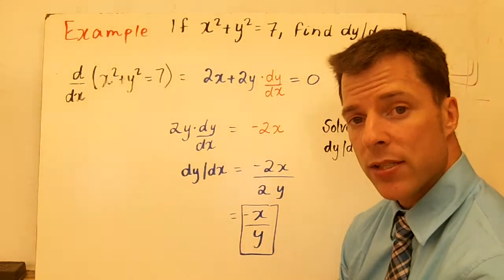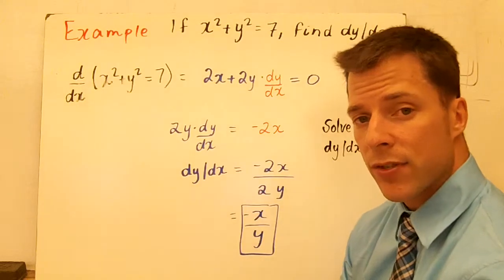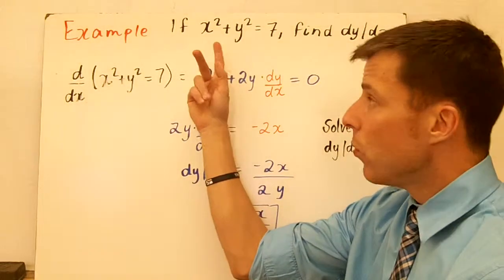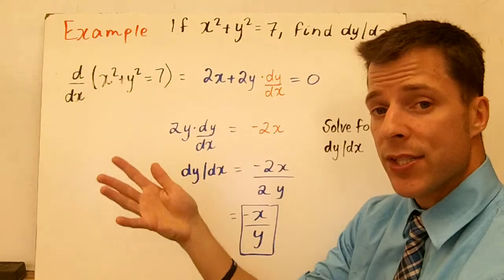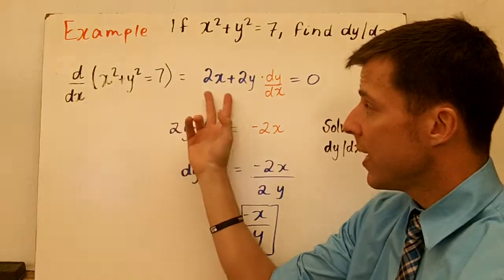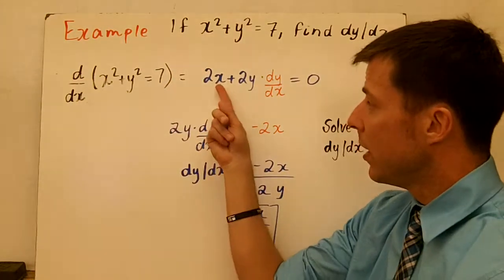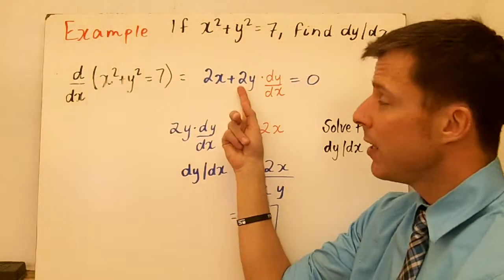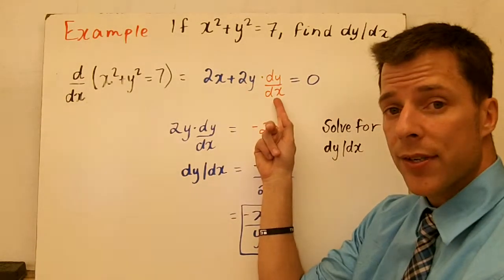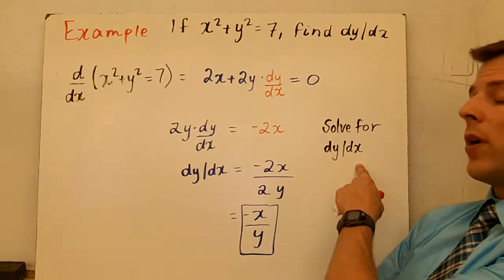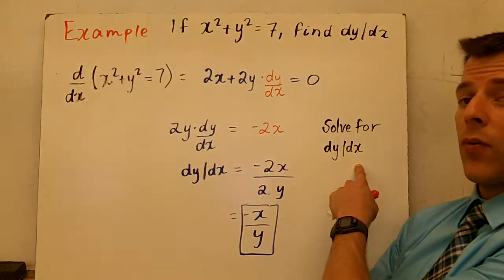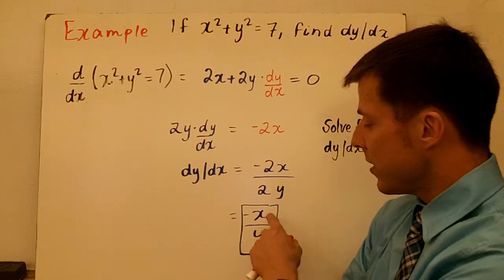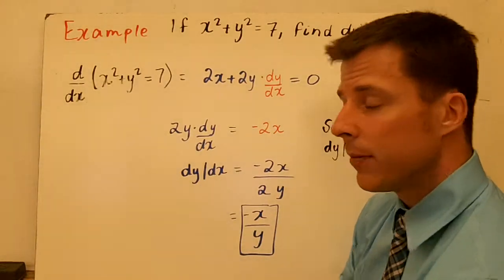Here's that whole process: you have two different variables, y isn't necessarily easy to solve for, so I take the derivative of every piece. Whenever I take the derivative of something containing y, I multiply it by dy/dx. Then I resolve the equation for dy/dx. The derivative of this function is negative x over y.